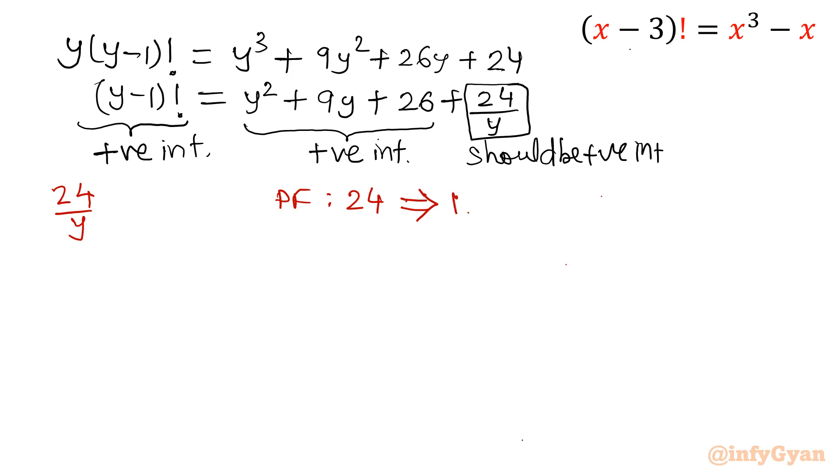The factors of 24 are: 1, 2, 3, 4, 6, 8, 12, 24. Now if your denominator y is one of these values, then we will get 24/y as a positive integer.